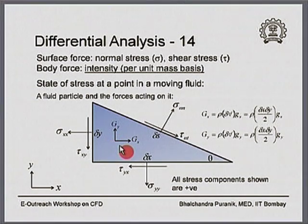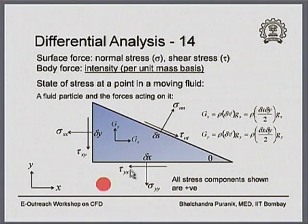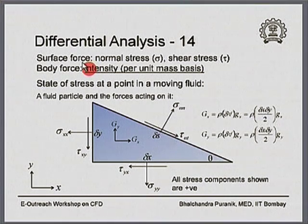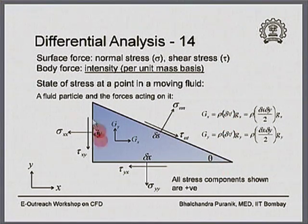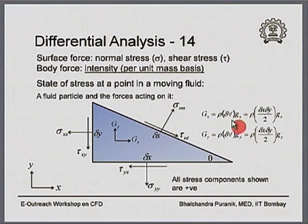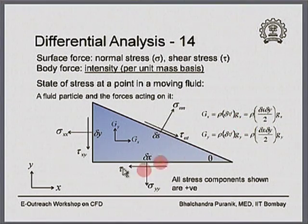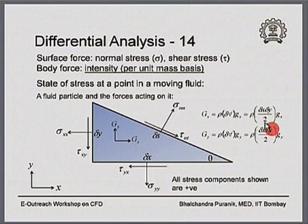Capital G is the body force acting on this particle. In the chosen coordinate system the body force will have an x-component G_x and a y-component G_y. Because we use an intensity as the basis for denoting body forces, G in the x-direction is written as the density times the volume element — essentially the mass of the fluid element — multiplied by the intensity g_x. Since the fluid element is triangular, the volume element is simply delta_x times delta_y divided by 2.